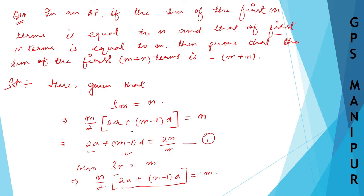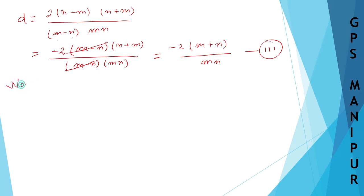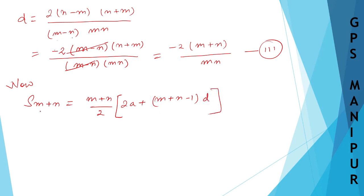Now the question asks us to prove that the sum of the first (m+n) terms equals −(m+n). The formula for S_(m+n) is: (m+n)/2 × [2a + (m+n−1)d].